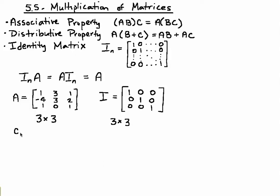When we multiply, remember we're multiplying the first row times the first column. 1 times 1 is 1, 3 times 0 is 0, 1 times 0 is 0. So when we add 1 plus 0 plus 0, we still get 1.